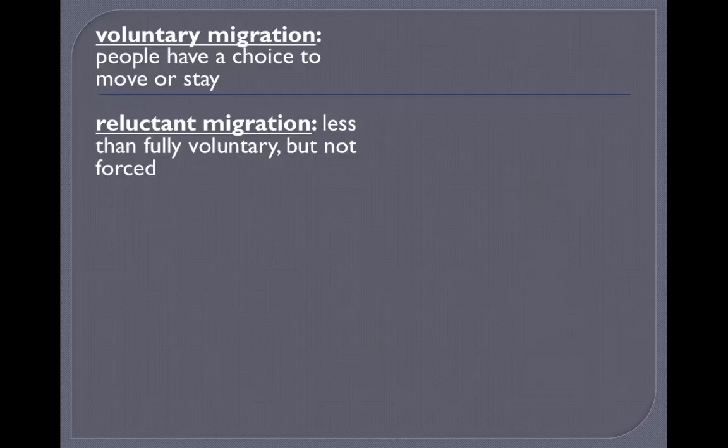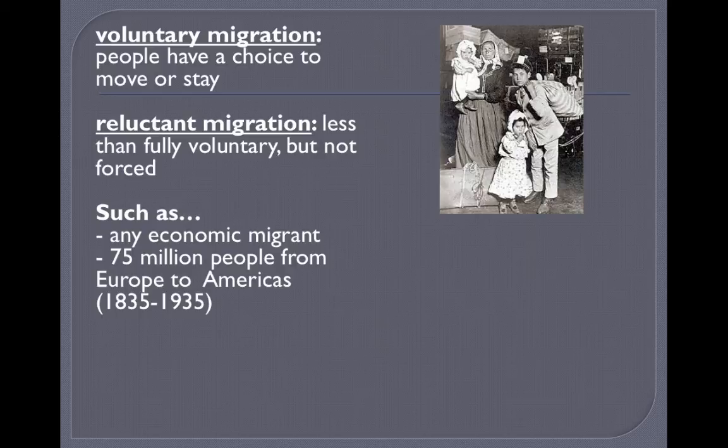Not-so-voluntary migration is reluctant migration — less than fully voluntary, but not totally forced. Any economic migrant is a reluctant migrant. All things being equal, they would probably stay in their home country, but forces beyond their control make it easier to leave than stay. Others are looking for opportunity or land of their own, such as the 75 million people who moved from Europe to the Americas between 1835 and 1935.